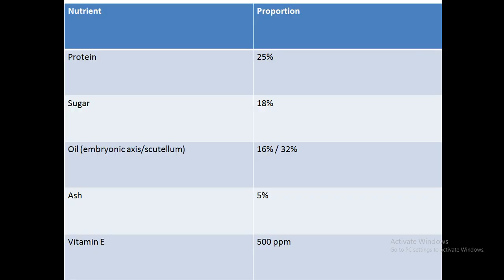The nutritional content of the germ is: protein 25%, sugar 18%, oil in the embryonic axis is 16% and in the scutellum is 32%, ash content is 5%, and vitamin E is 500 ppm (parts per million). These values are very important from an examination point of view.